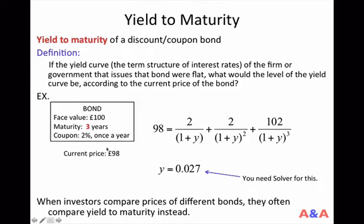Suppose the current price of this bond is £98. With this bond, after 1 year you will receive a £2 coupon, and after 2 years you will receive another £2 coupon. At the end of the 3rd year you will receive a £2 coupon and £100 face value — so £102 in total — and the current price of such a bond in the market is £98 today.